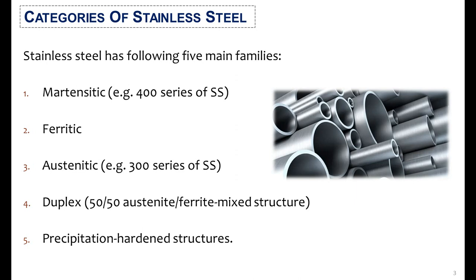There are mainly five types of stainless steel. The first is martensitic and the second is ferritic — both come into the 400 series of SS grades. The third is austenitic, which comes into the 300 series of SS grades like 304 or 316. The fourth is duplex, which has a 50/50 austenite and ferrite mixed structure, and the last one is the precipitation-hardened structure.